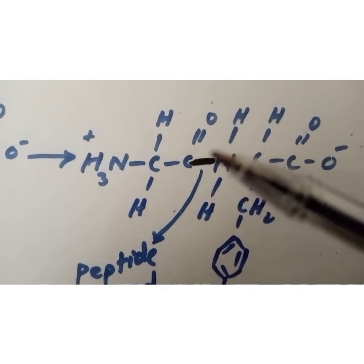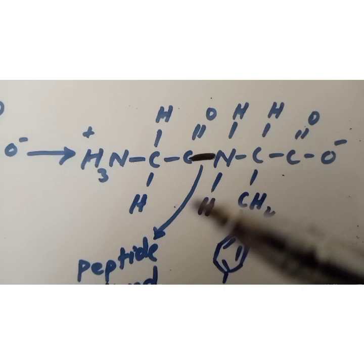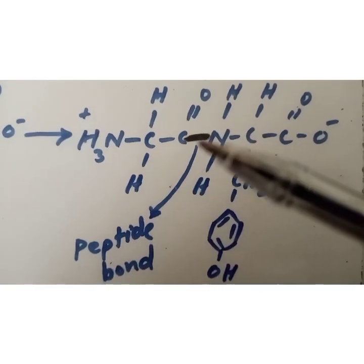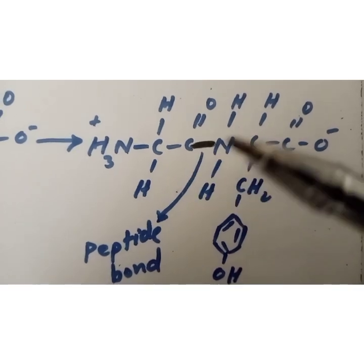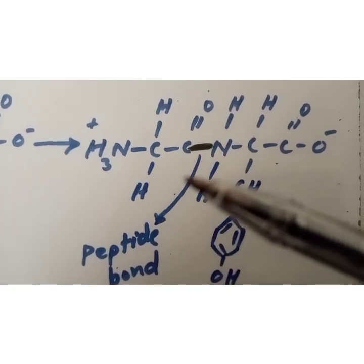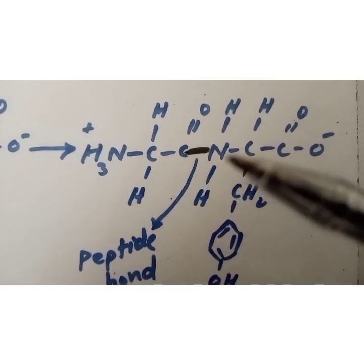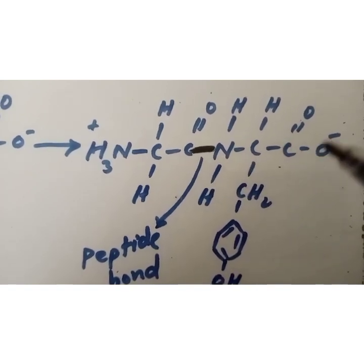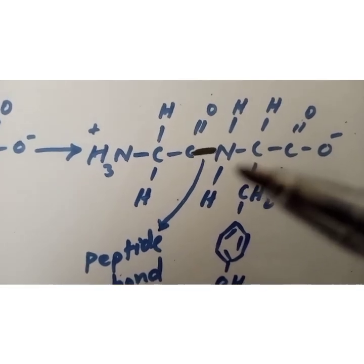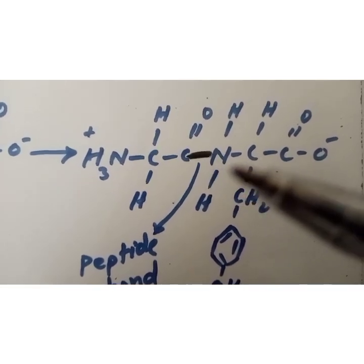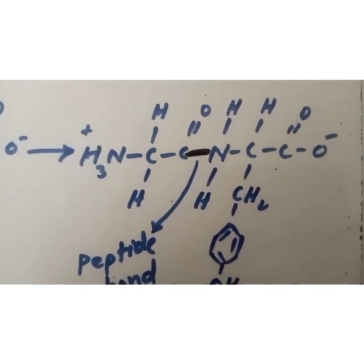This reaction results in a peptide bond between the two amino acids, with the release of a water molecule. These bonds are formed between the amino acids, and as a result a polypeptide chain is formed, which matures to become a protein.